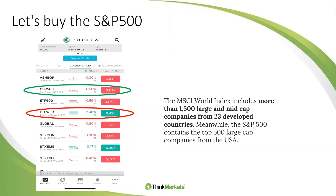To buy it or find it, just hit that search button in the top right-hand corner on the app with ThinkMarkets. The nice thing about ETFs, by the way, is you do not pay any STT — Securities Transfer Tax. That's a 0.25% fee charged on shares. The nice thing with ETFs is there is no STT on it, so your brokerage is literally your only cost. It's 0.25%, minimum 30 Rand. Just hit the search button, type in S&P 500 or MSCI and you'll be able to find it immediately. You can trade or invest in it, or add it to your watch list and track it.